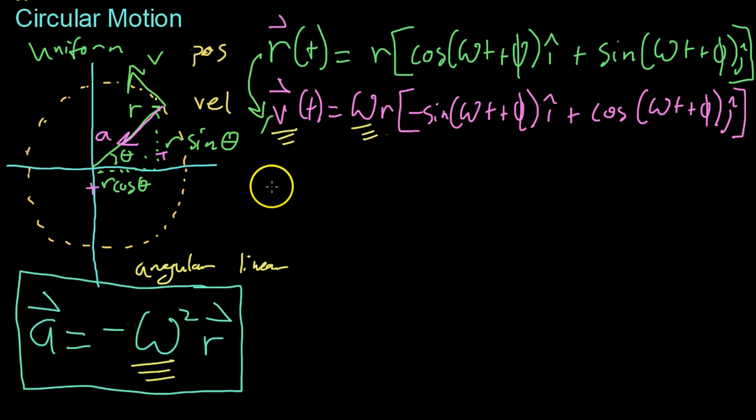Luckily, we have an equation for linear velocity in terms of angular velocity right here. So what we can do is determine the speed. If you'll remember, speed is just the magnitude of velocity, which is the square root of its components, the Pythagorean theorem. So you get omega squared r squared times sine squared omega t plus phi.